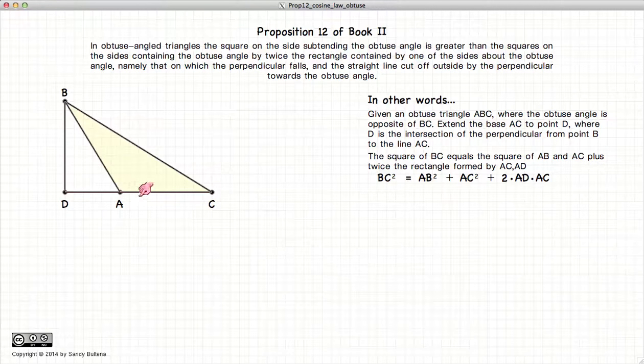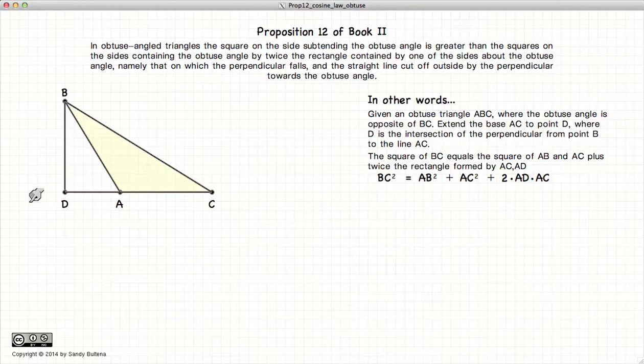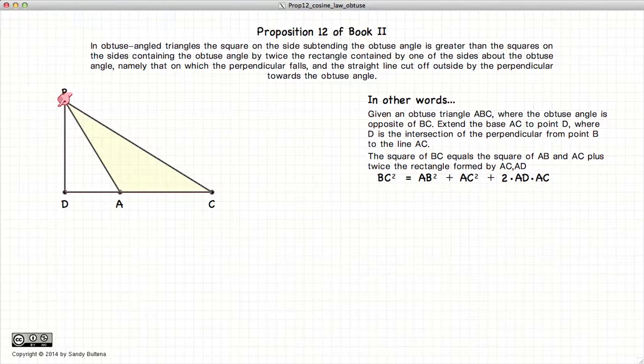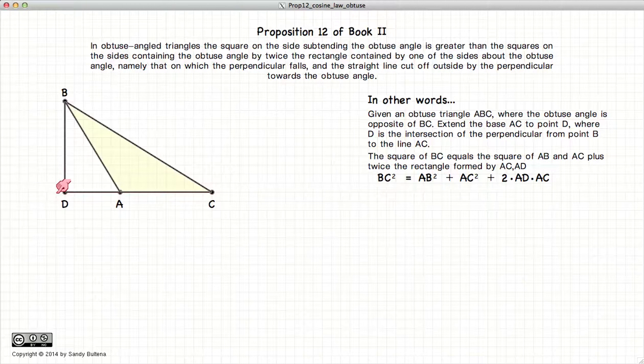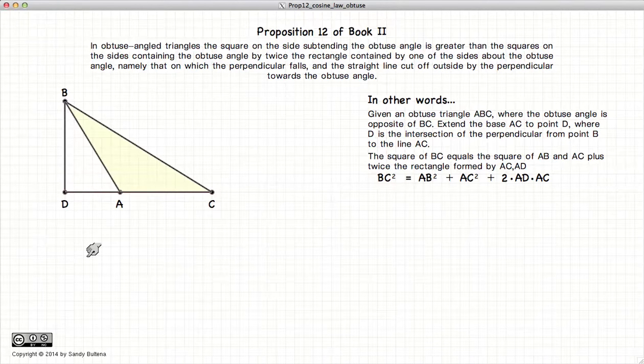If we have our obtuse triangle ABC, we extend the line AC outwards towards point D, and from B, we draw a line that is perpendicular to AC. Where it intersects, we call that point D.